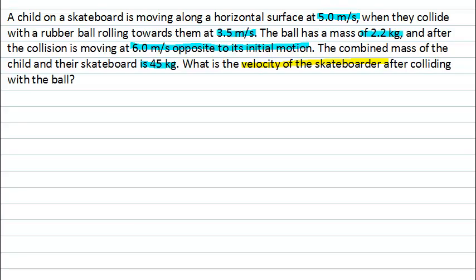Let's begin by drawing a diagram that gives us a simplified version of this problem. Here is our skateboarder, let's call them M1, and they're moving horizontally at initial speed of 5 metres per second.